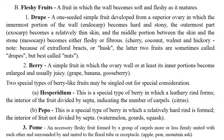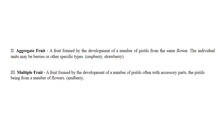Pome means an accessory fleshy fruit formed by a group of carpels more or less firmly united with each other and surrounded by a united floral tube or receptacle, like apple, pear, mountain ash. Aggregate fruit is a fruit formed by developing a number of pistils from the same flower, like raspberry or strawberry.